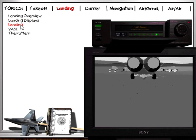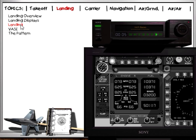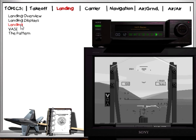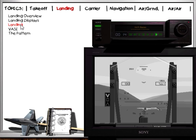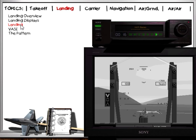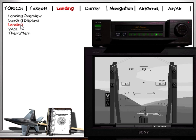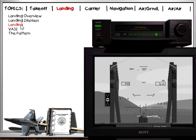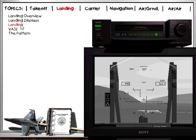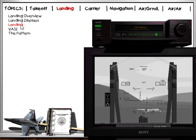Perform a quick landing checklist as you begin your approach to the airstrip. Gear and flaps are down as confirmed by the indicator lights just left of the IFEI. Hook is up in this case since it's normally only required for carrier operations. The ILS is on and displayed in the HUD. As you get closer to the runway, the ILS needles will seem more sensitive. Try not to induce oscillations around the glide slope and lineup by chasing the needles.